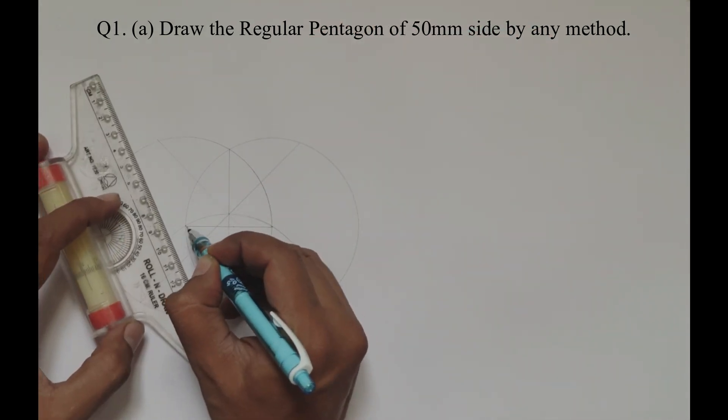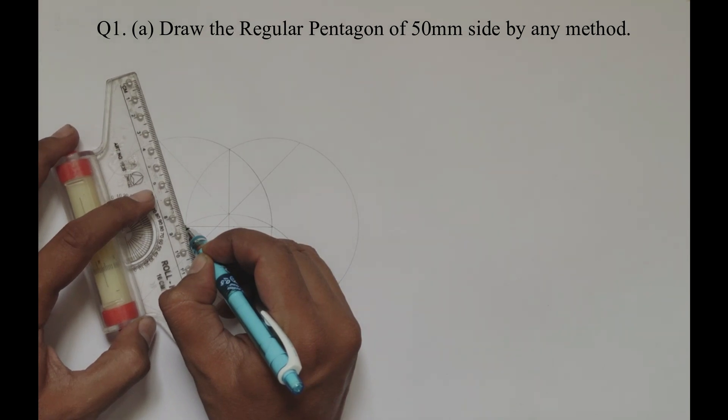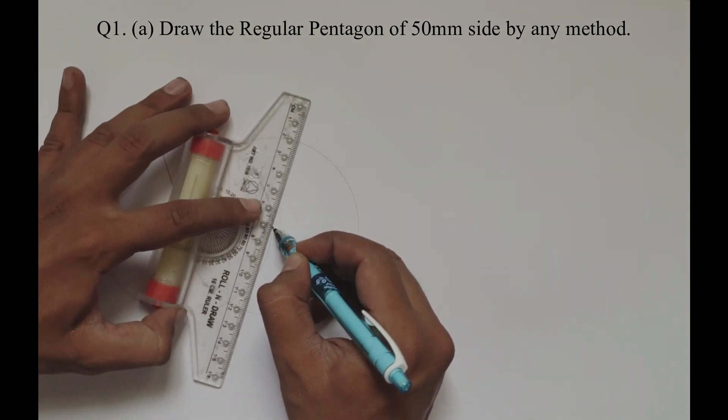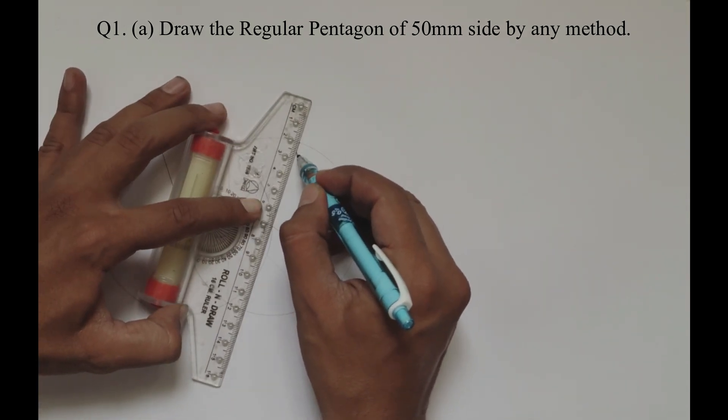Now you have to join the end of the line with this point. This is our second side of the pentagon, and similarly on this side you will get the third side of the pentagon.